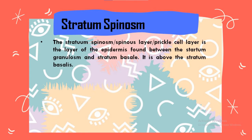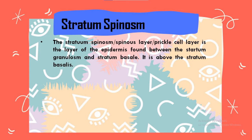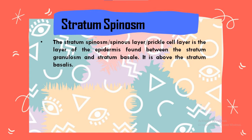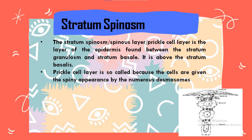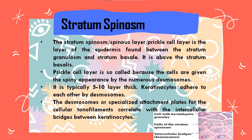The second layer of epidermis is the stratum spinosum, also called the spinous layer or prickle cell layer. It is found between the stratum granulosum and stratum basale. The prickle cell layer is so called because the cells are given a spiny appearance by numerous desmosomes. It is typically 5 to 10 cell layers thick, with keratinocytes attached to each other by desmosomes. The desmosomes are specialized attachment plates for cellular filaments, correlated with the intercellular bridges between keratinocytes.